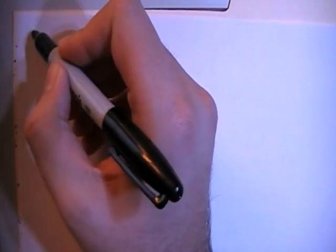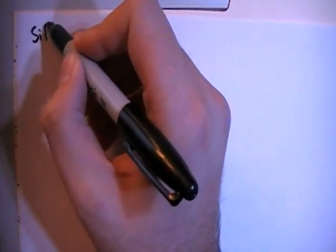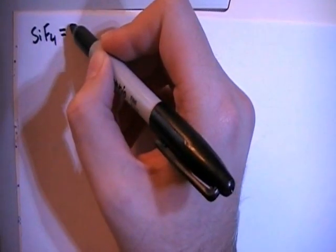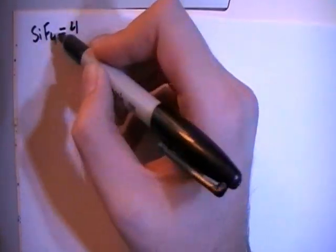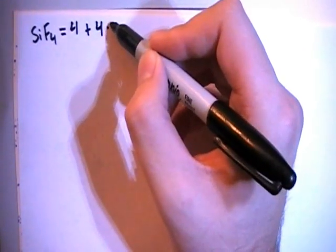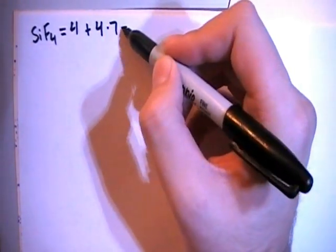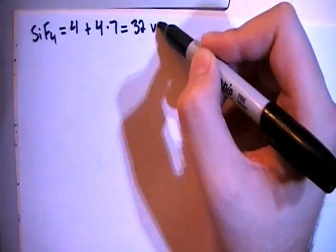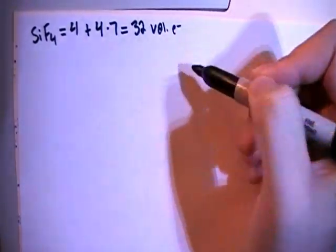Silicon tetrafluoride is going to be SiF4 and that's going to give us 4 valence electrons from the silicon plus 4 fluorines each with 7 valence electrons and that's going to give us a total of 32 valence electrons.